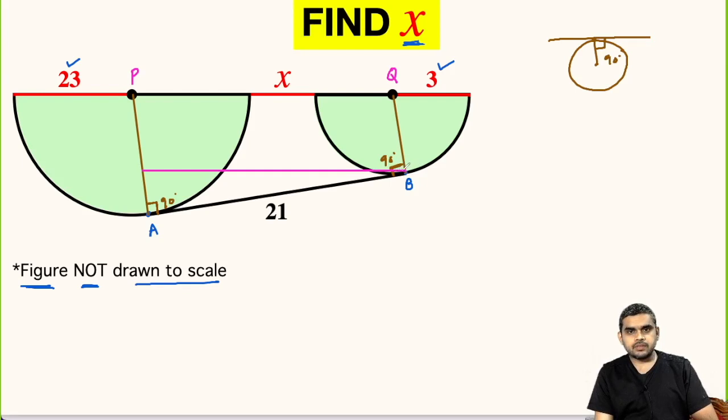So if this is point B, let us name this point C. So this BC is parallel to PQ. Now this is the radius of smaller semicircle. This will be 3 units.